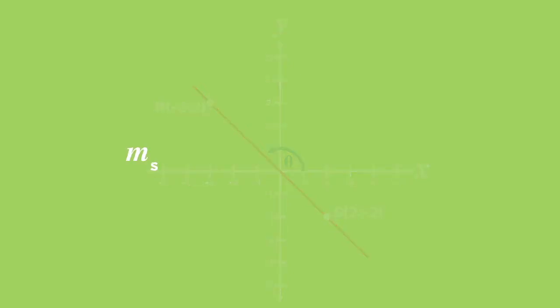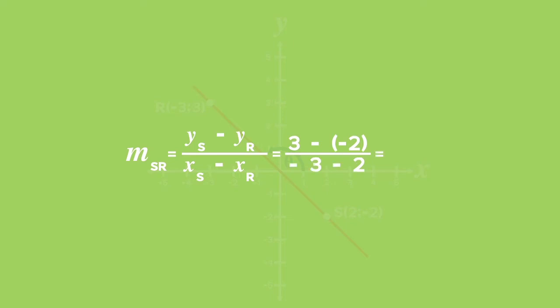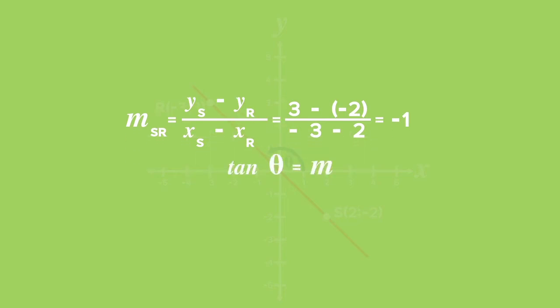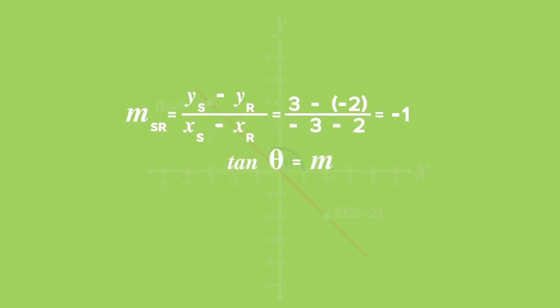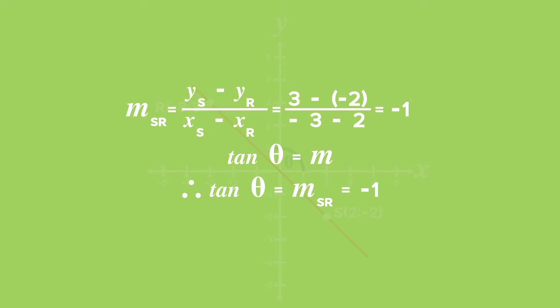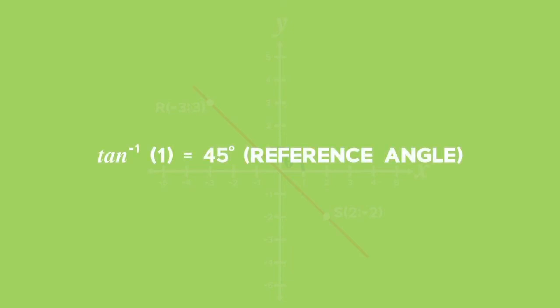The gradient of line SR equals y_S minus y_R, all divided by x_S minus x_R. This equals 3 minus negative 2, all divided by negative 3 minus 2, which simplifies to negative 1. Therefore, tan theta equals the gradient m of SR equals negative 1. On your calculator, enter second function, tan, and the ratio 1, excluding the negative sign.